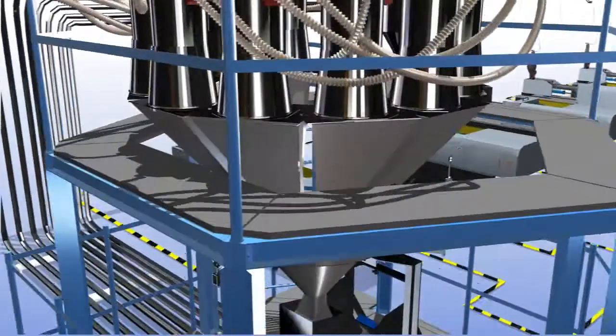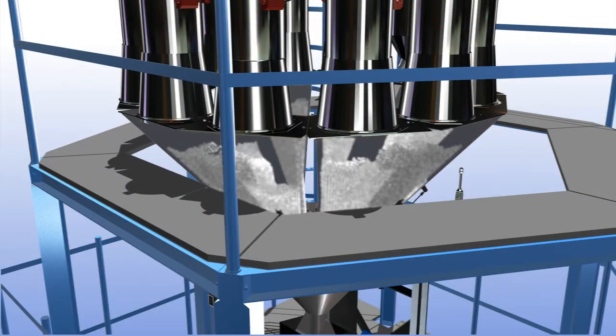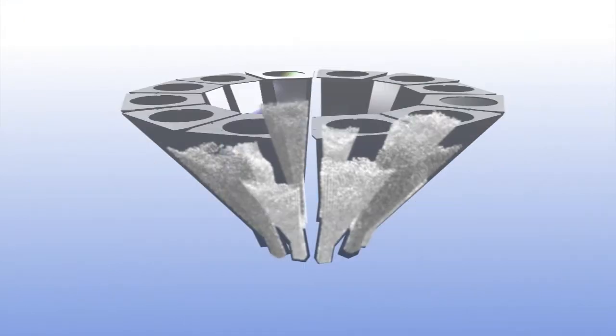At the top of the PelletSave system sit the raw material hoppers, one hopper for each type of material. There can be up to twelve of these hoppers holding twelve different raw materials.